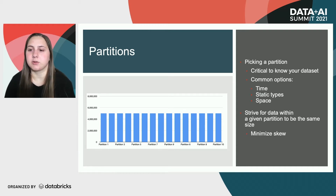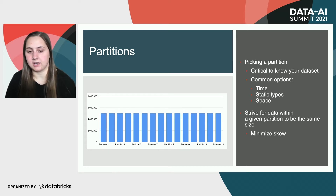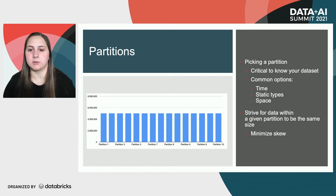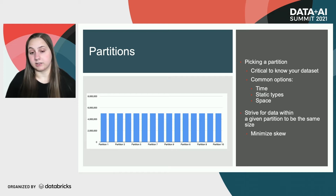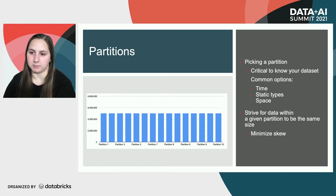When you're picking a partition, it's critical to know your data set. Some common types of partitions would be by time — maybe you partition by year or month — or different static types common for your specific data set. In the instance of agricultural data, that could be something like harvest, application, or seeding. The one we're going to focus on is by geographical space. With partitions, you want to strive for the data within a given partition to be the same size to minimize skew, which allows you to have repeatable and predictable job or query runs.